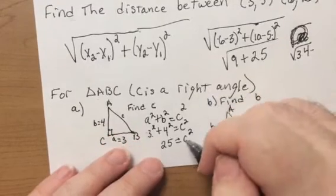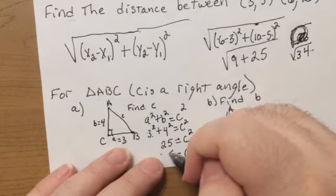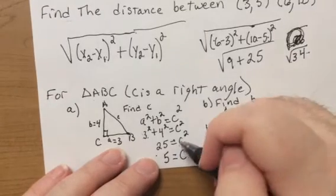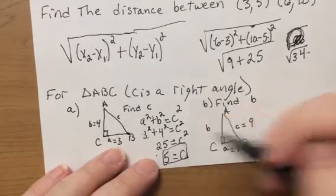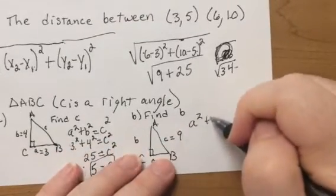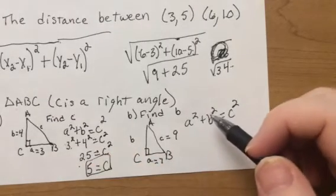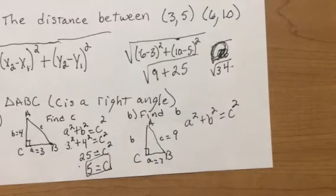Now, you square root. Normally, when you square root, this would be plus or minus 5, except when it's representing a distance. So, it would just be 5. So, a squared plus b squared equals c squared.